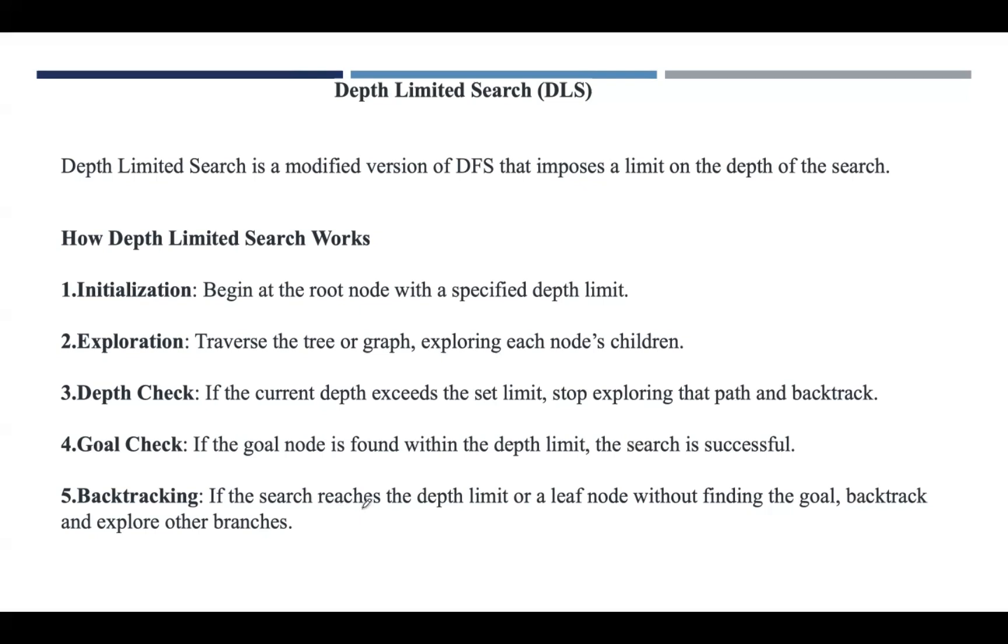If the search reaches the depth limit or leaf node without finding the goal—suppose the goal node is present at level 3 but we set the depth limit as 2—then we can't find the goal within the depth limit.